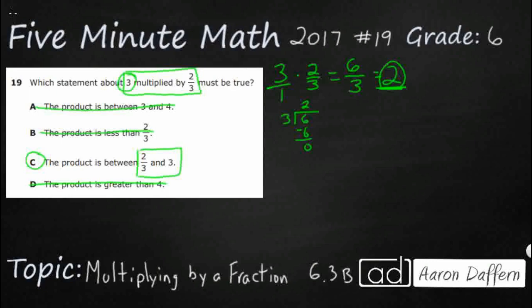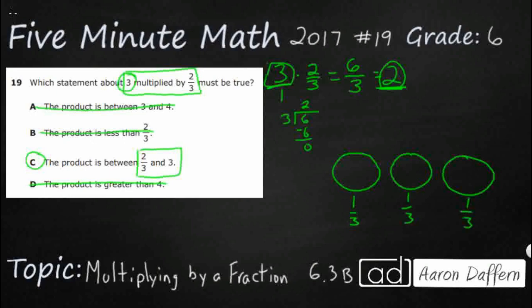Let's see if we can figure out why we got a smaller product. What we did is we took our three wholes — this represents our 3 — and we took 2 thirds of it. If we're looking at fractions of a set where each piece represents a third, then if I'm going to take 2 thirds of 3, I'm just going to take these two wholes right here. And there's my 2.